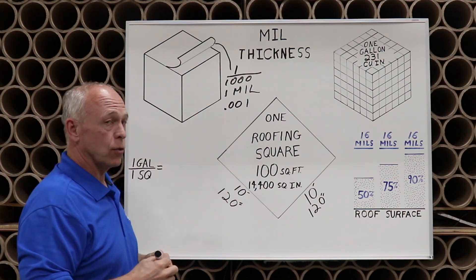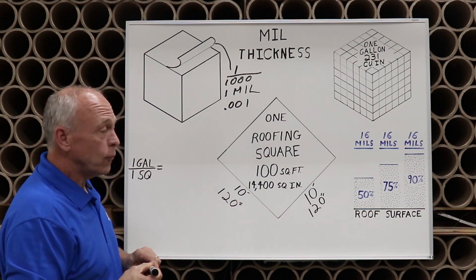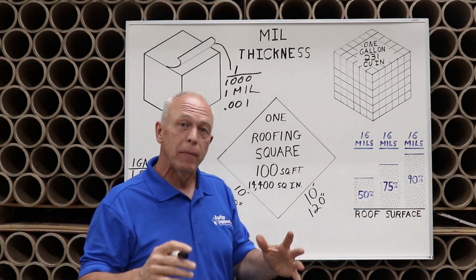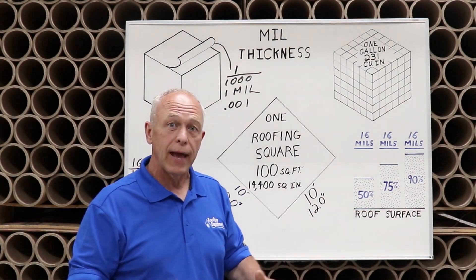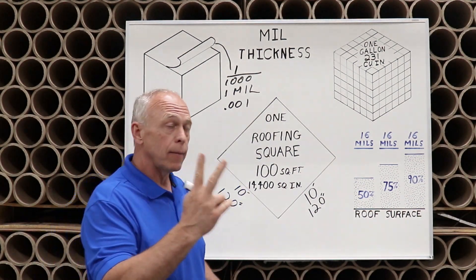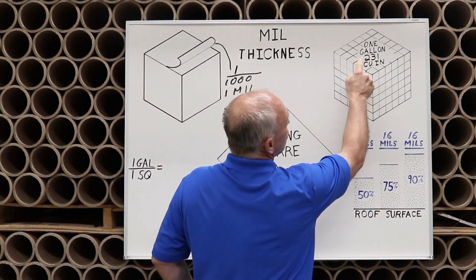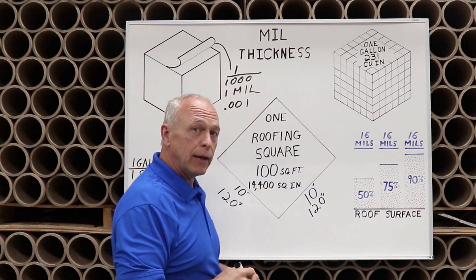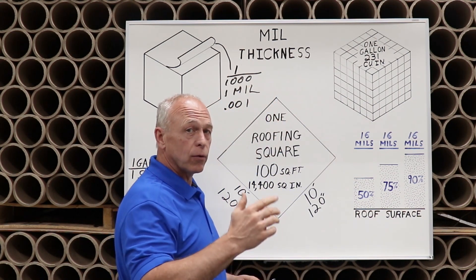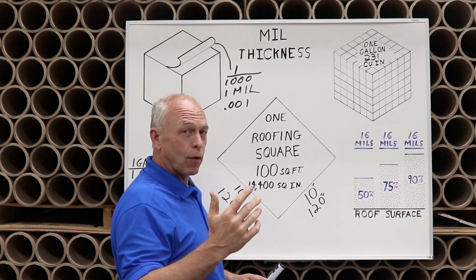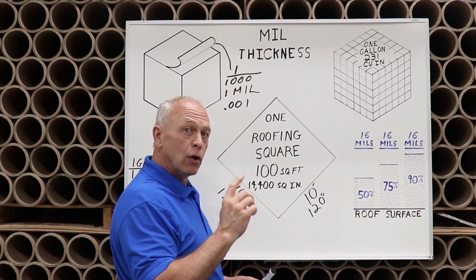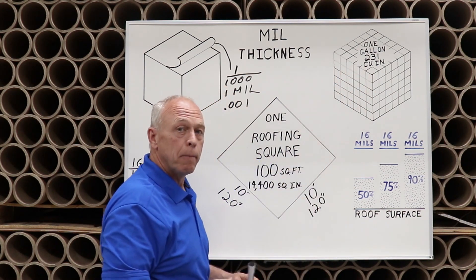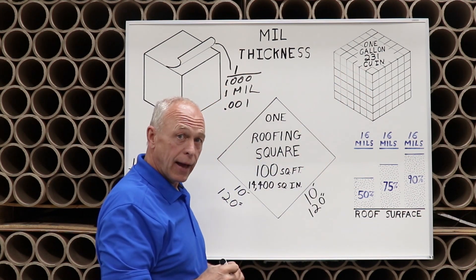One cubic inch. Now if we take that cubic inch and ask how many of those make one gallon, we come to number two: there are 231 cubic inches in one gallon. Whether it's milk or roof coating, 231 cubic inches make up one gallon.